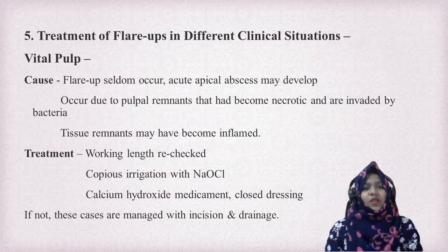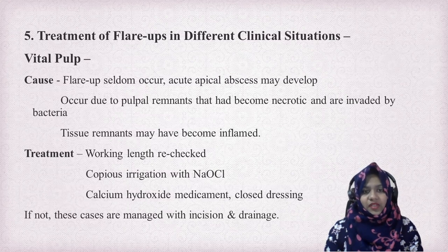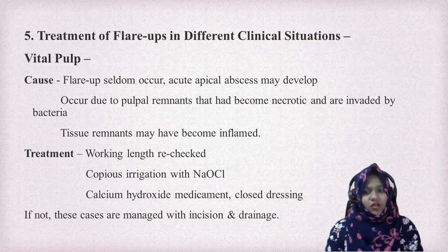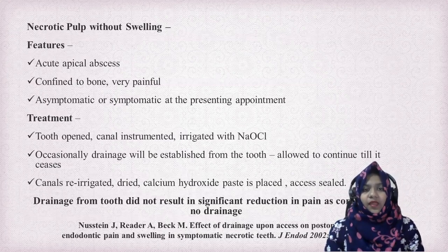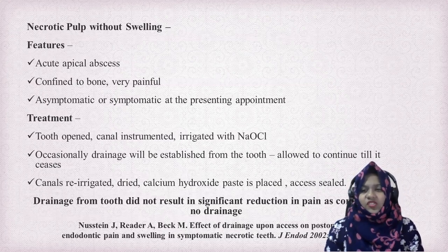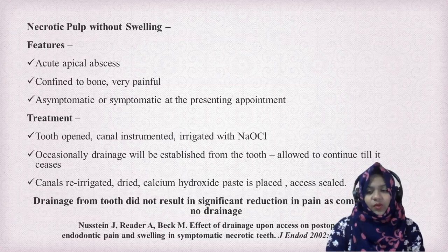In vital pulp, flare-ups seldom occur. They may occur due to pulpal remnants that become necrotic and are invaded by bacteria. Treatment involves re-establishing working length, copious irrigation with sodium hypochlorite, intracanal medicament, and closed dressing. If not resolved, these cases are managed with incision and drainage. In necrotic pulp without swelling, the tooth is opened, the canal is instrumented and irrigated with sodium hypochlorite. Occasionally there will be drainage; the canals are then re-irrigated, dried, intracanal medicament is placed, and the access is sealed. According to one study, drainage from the tooth did not result in significant reduction in pain compared to no drainage.